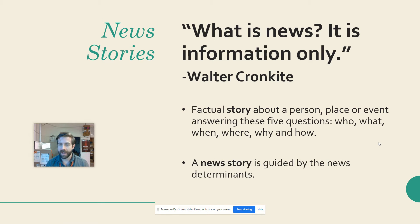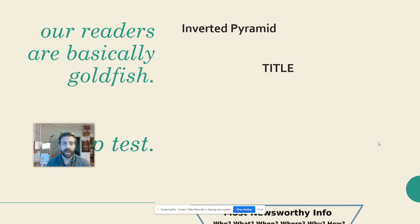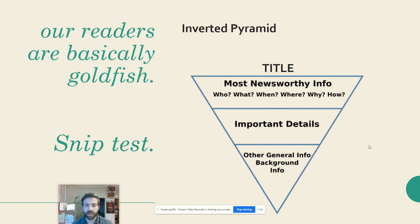We are guiding these by our news determinants. Those are the five criteria that we use to judge whether something is newsworthy or not. And it's written in the inverted pyramid style. If you don't remember what that is, that's where we organize our most important information first.